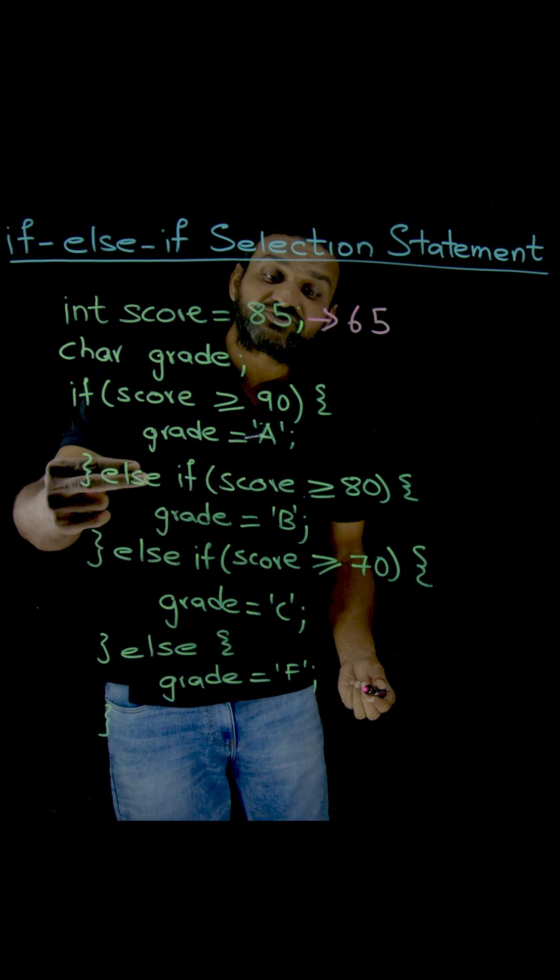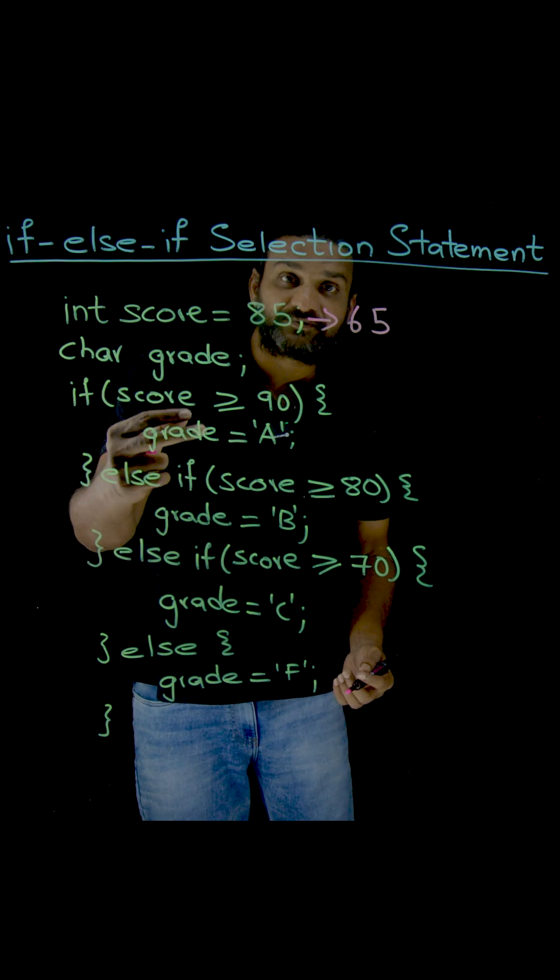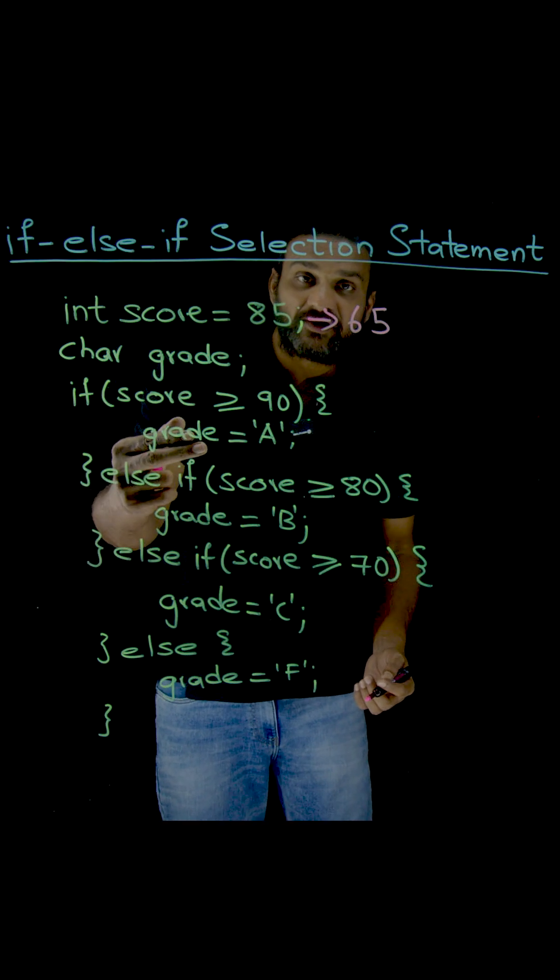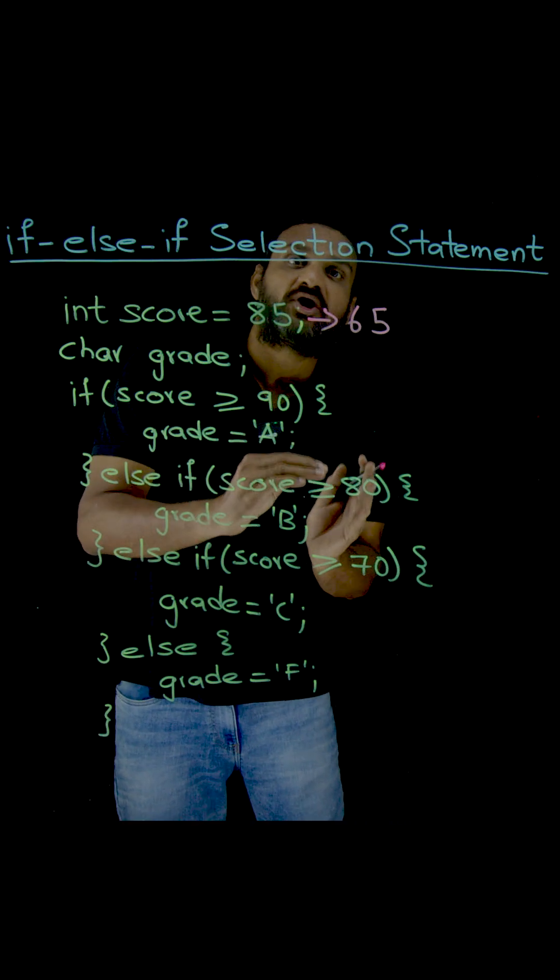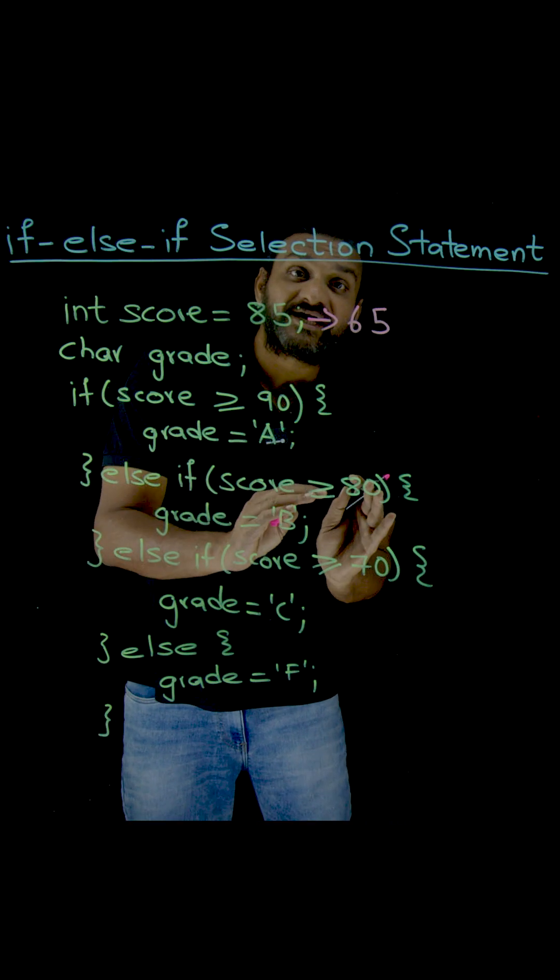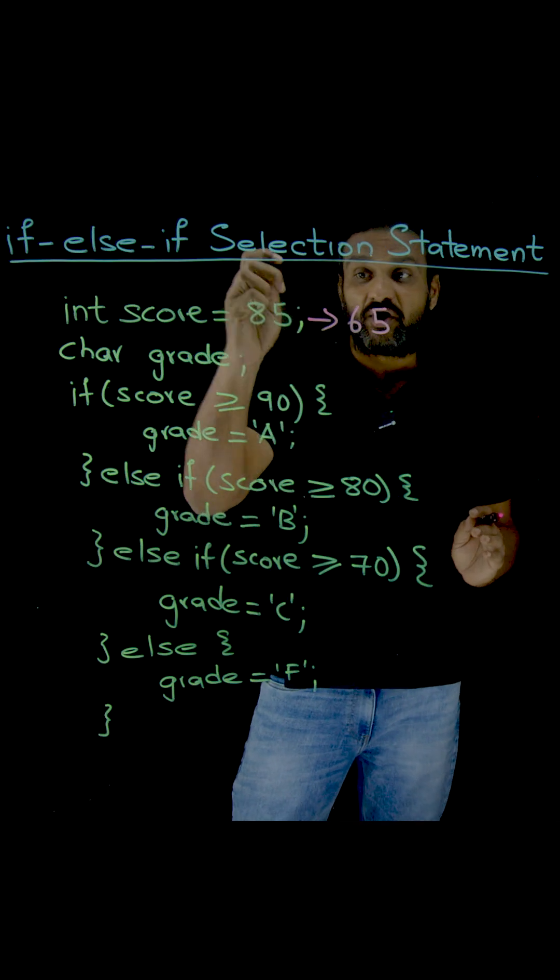If any of these options are not true, if any of these multiple options that are available are not true, then we are going to go into the default option which is provided within the else statement. That is the end of all the options.